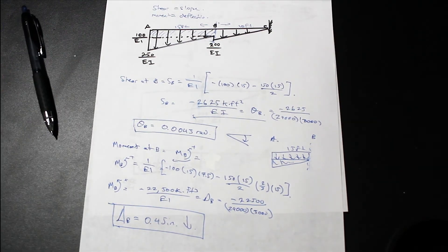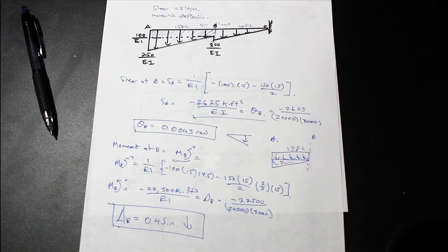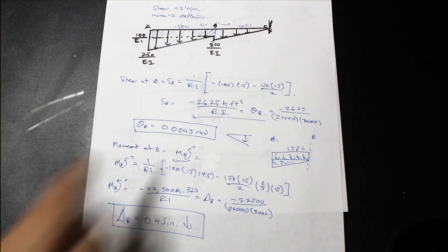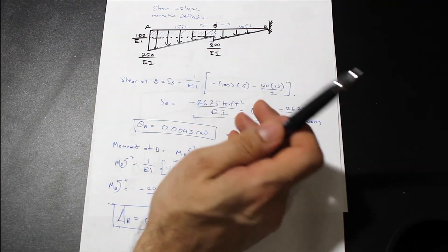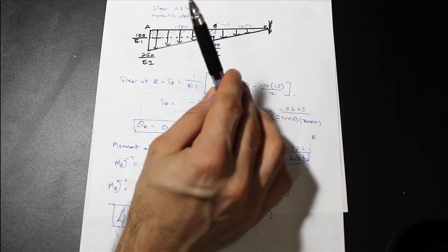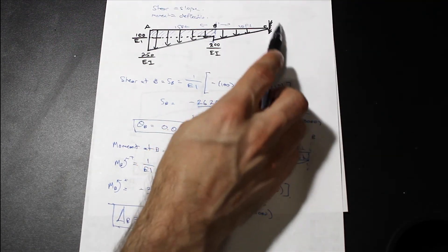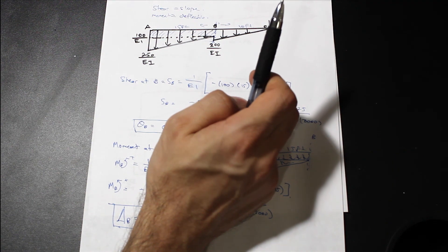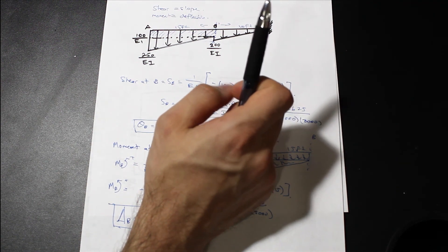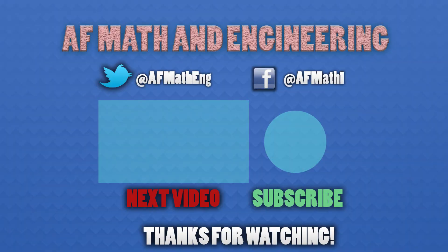That's a simple example of the conjugate beam method. We'll do more with trickier conjugate beams, but that's basically it. When you cut the beam, choose the side smartly so you don't have to find reactions if possible. Make it easy on yourself — thanks for watching, like and subscribe.